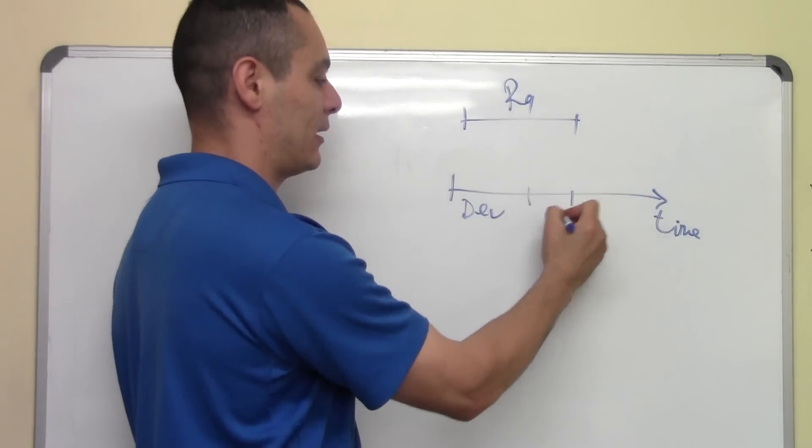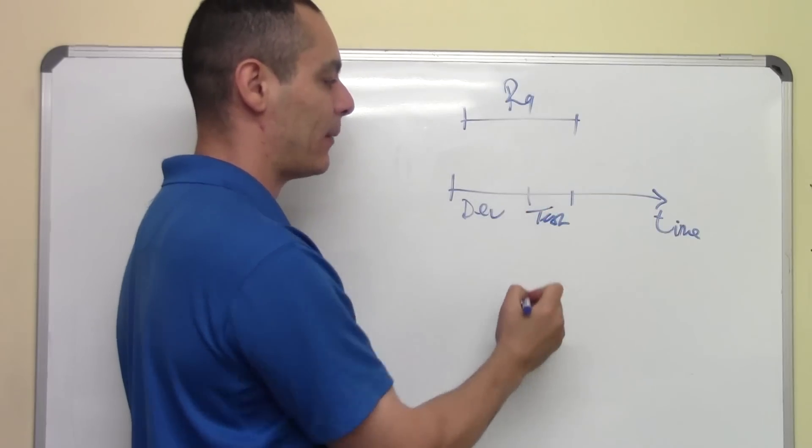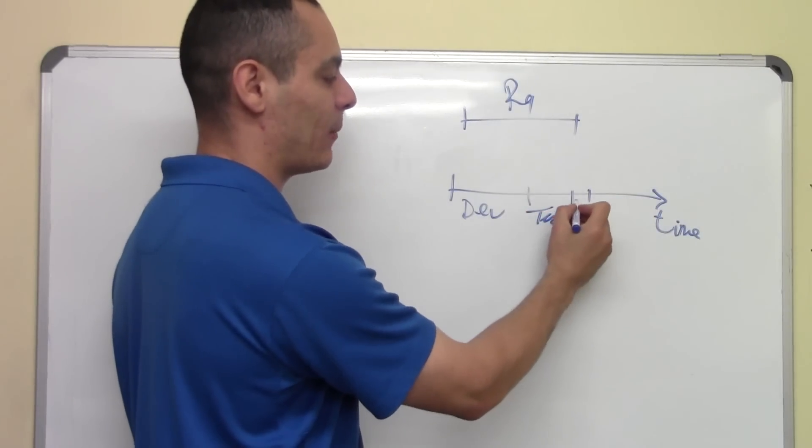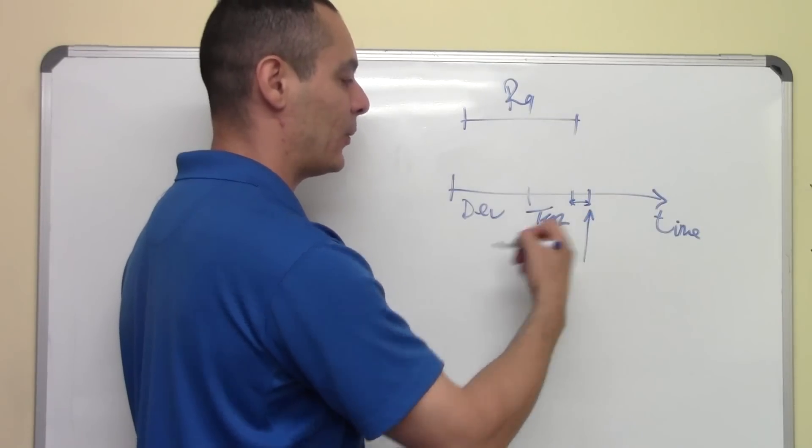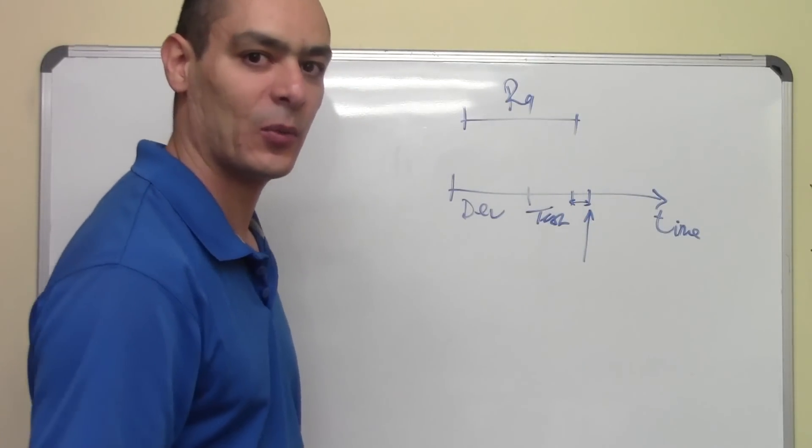Let's say that to develop this product we have to take this time, and to test it, we need this time. Let's say we take some buffer time here, and we're going to deliver this product somewhere here. We're happy, the client is happy, we start to work.